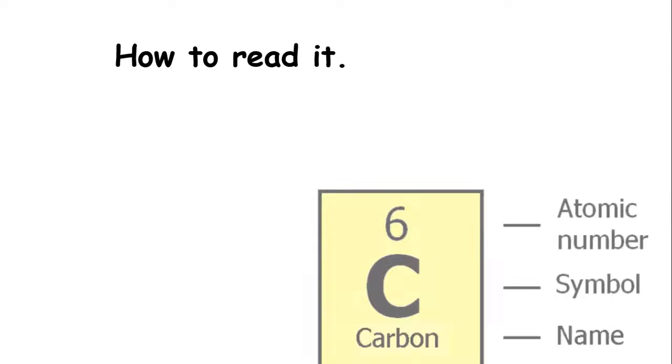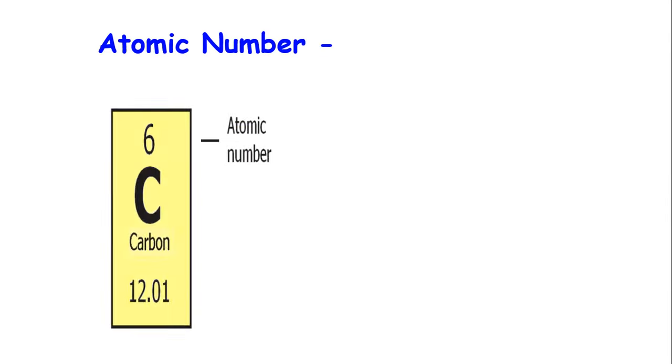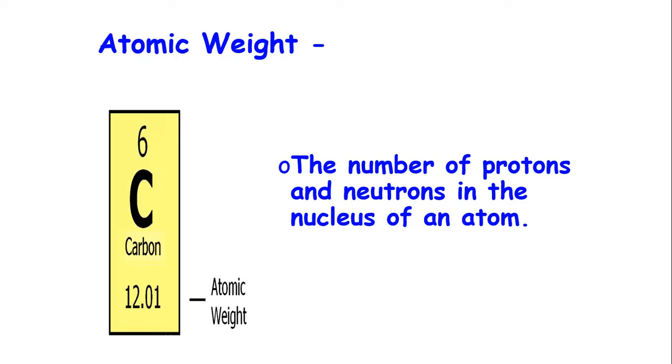How to read it. Each element has a square. The number in the top of the square is the atomic number. The symbol is C. The name is written below the symbol, carbon. The atomic weight, 12.01, written at the bottom. Atomic number, it's the number of protons in the nucleus of an atom. Symbol, the short name for the element. Atomic weight, the number of protons and neutrons in the nucleus of an atom.